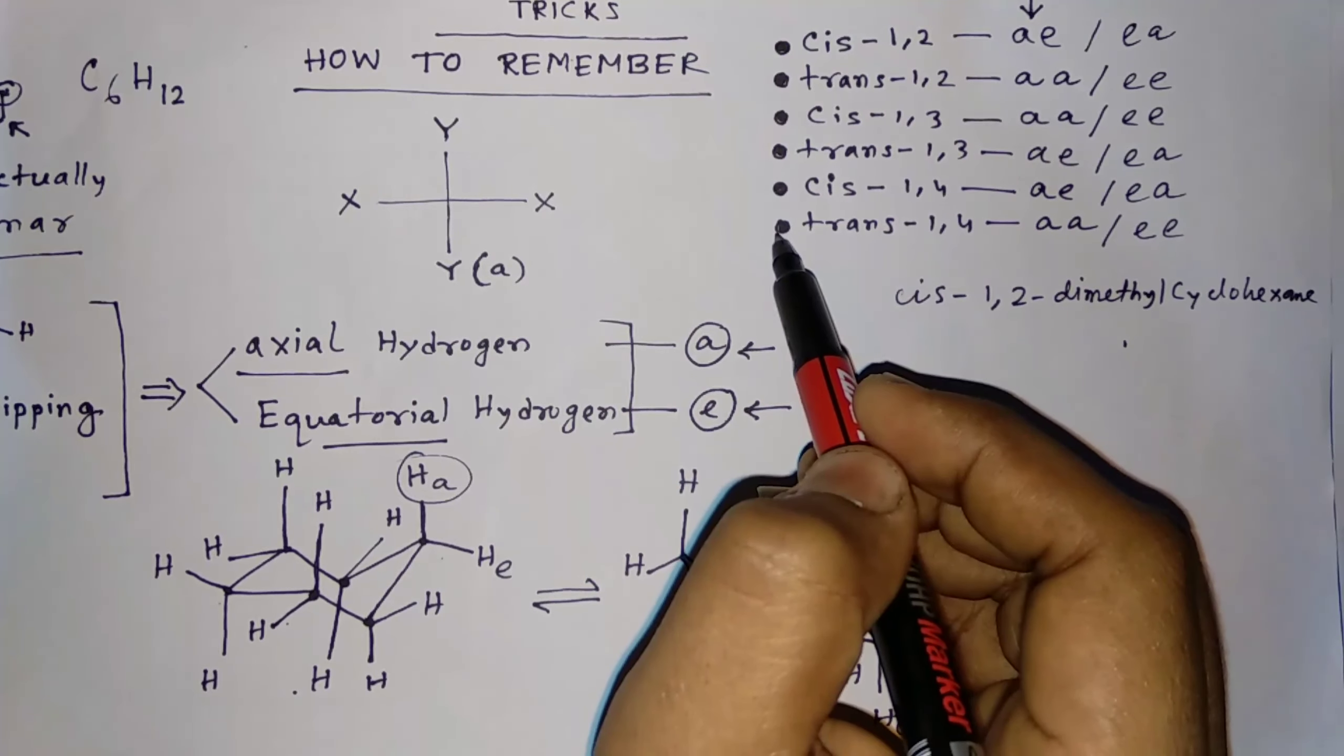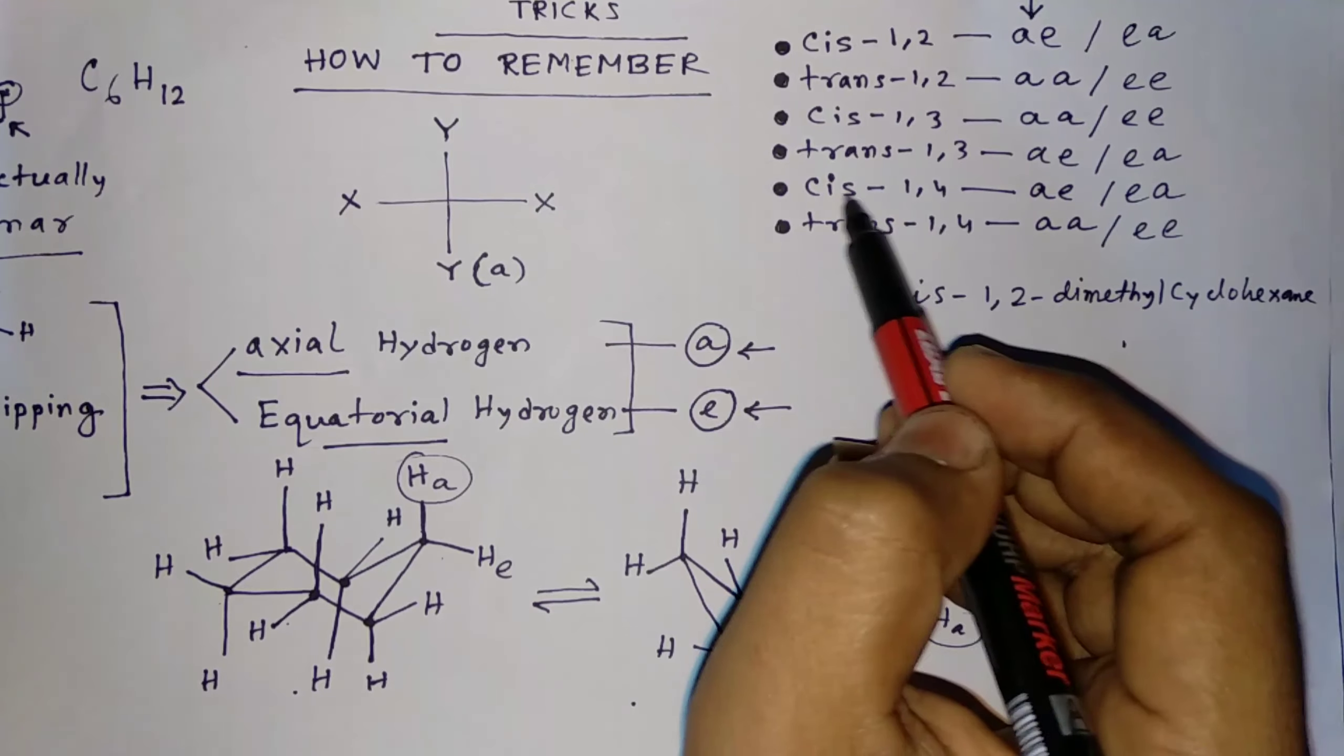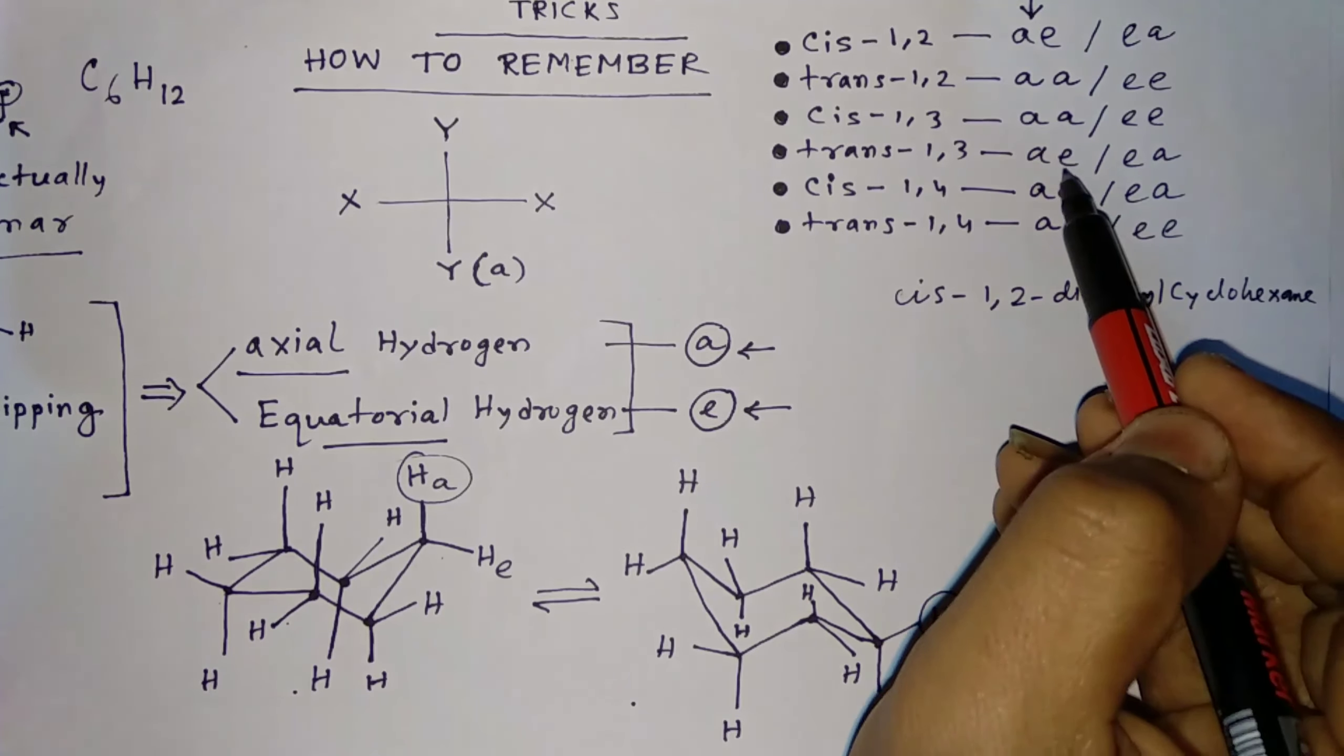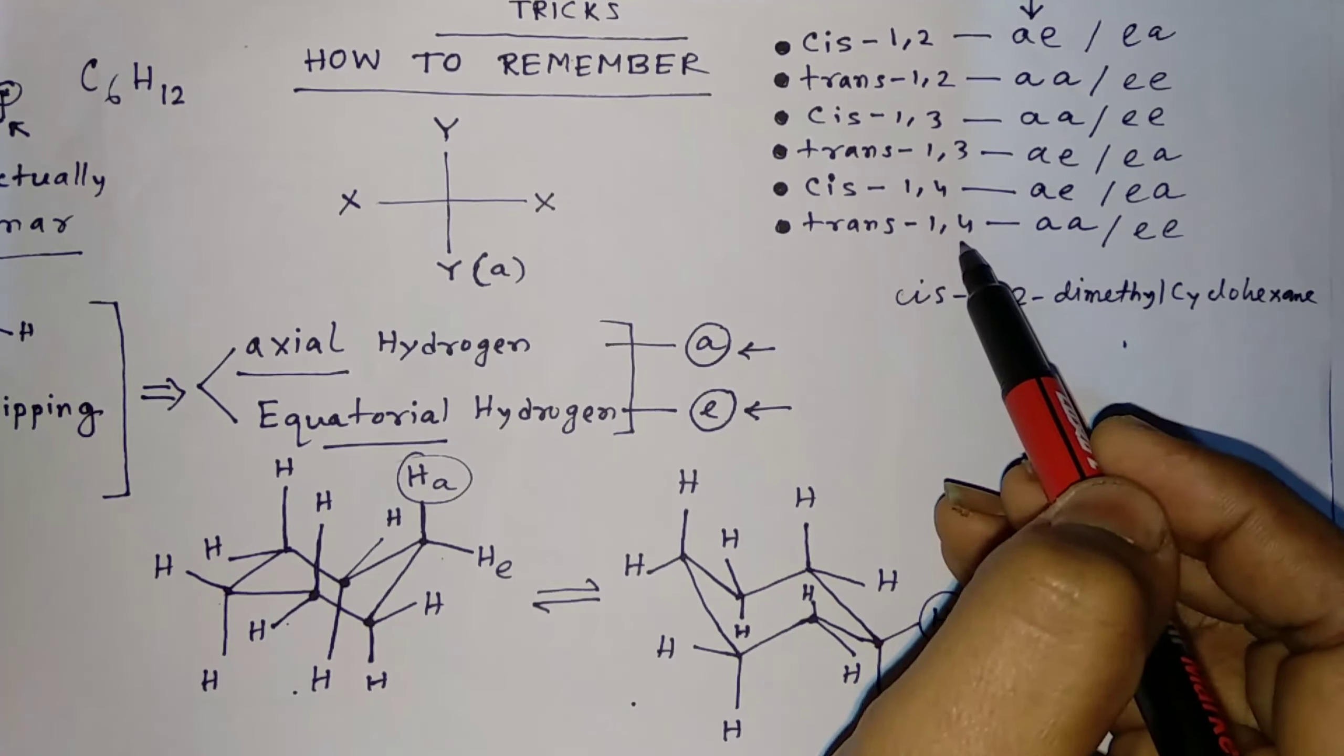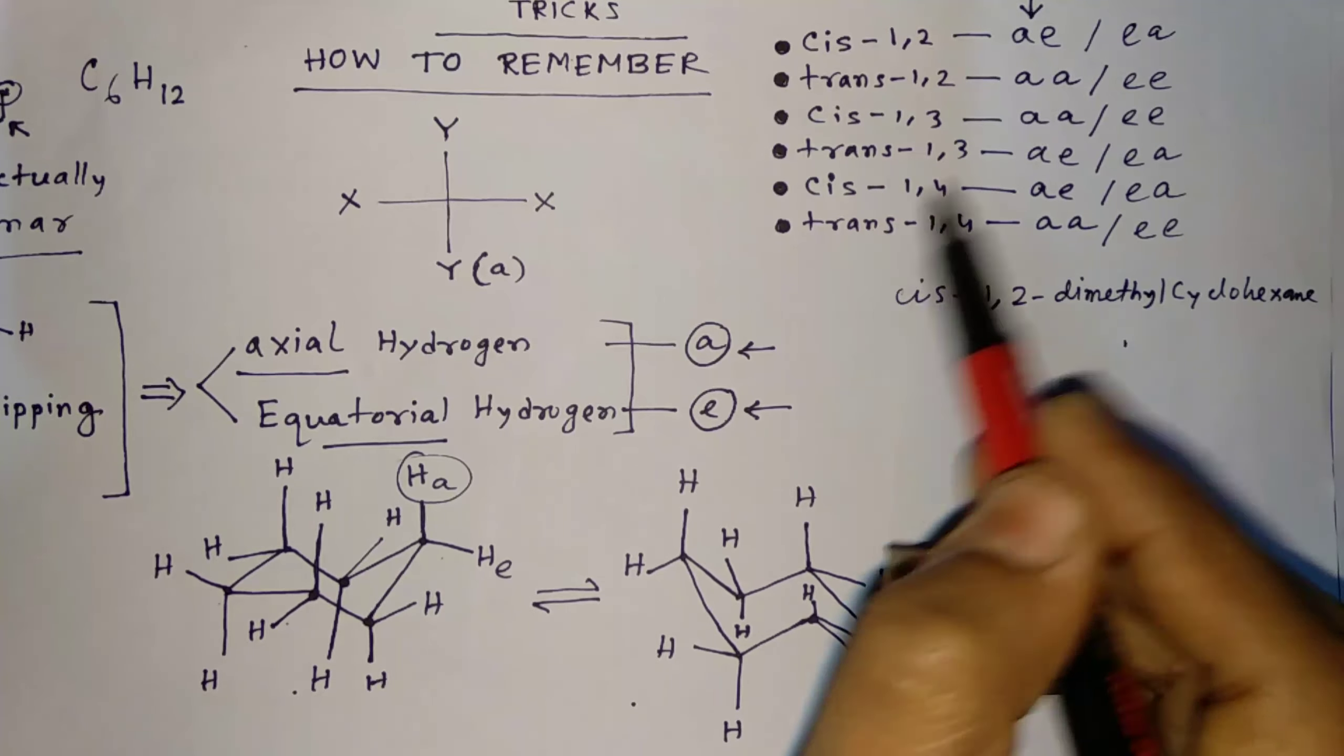So how to remember? Just remember: AE-AA-AA, just short form. And how are these all related to this one? So CIS-1,2, TRANS-1,2, CIS-1,3, TRANS-1,3, CIS-1,4, TRANS-1,4. CIS-1,2 is AE, TRANS-1,2 is AA, CIS-1,3 is AA, TRANS-1,3 is AE, CIS-1,4 is AE, TRANS-1,4 is AA. This is the right way to remember and this is a tricky way to remember all of this.